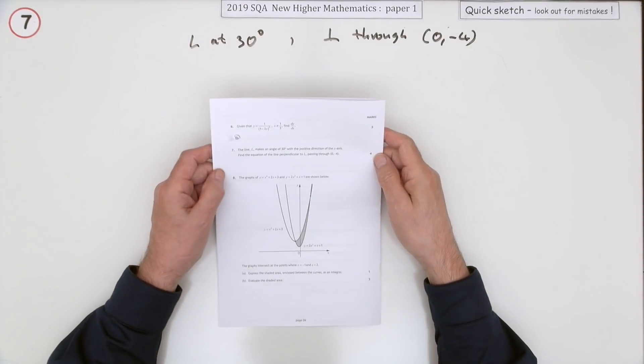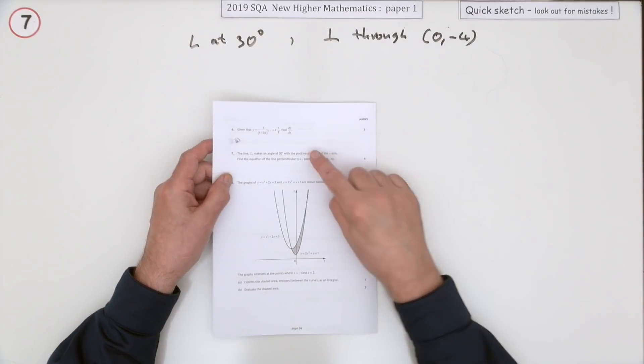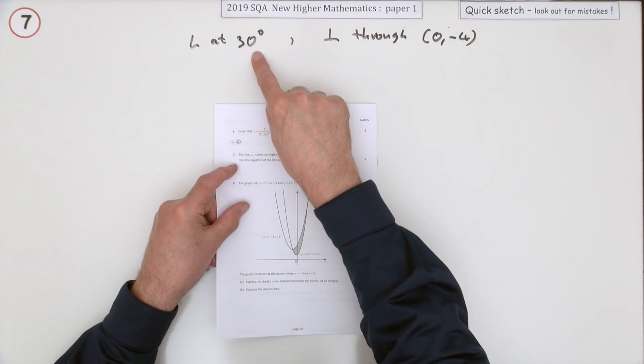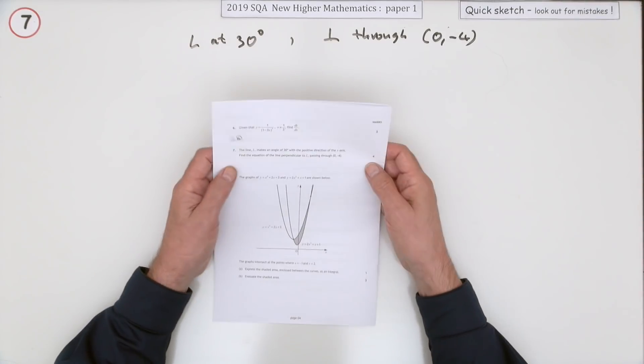Question 7 from the 2019 Higher Maths Paper 1, a 4 mark question, this time on lines. Lines and angles - that should ring a bell straight away. The gradient of the line is the tangent of the angle.